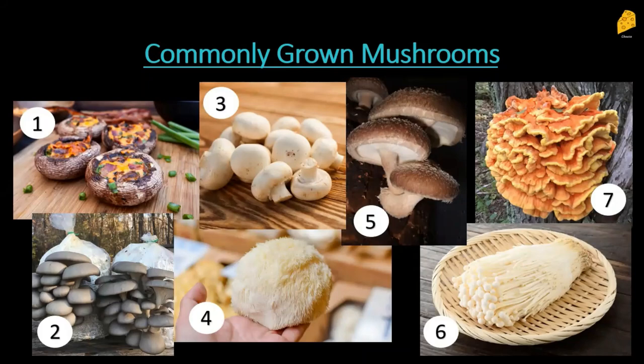I want to talk about some commonly grown mushrooms to give you an idea of the width and breadth of what you can grow in your own garden or home. There's a wide variety of mushrooms that are far easier to cultivate than you might imagine. Number one is Portobello — Agaricus bisporus — widely used in fancy restaurants and homes throughout the U.S. Number two is the oyster mushroom, specifically a pearl oyster — Pleurotus ostreatus. There are lots of different kinds of oyster mushrooms and they are a fantastic beginner mushroom. They're super simple to grow and come in a huge variety of colors, which makes them a great starter set for teaching children about mycology.